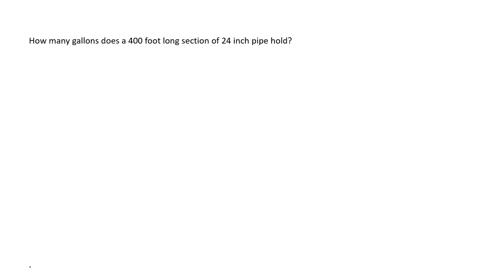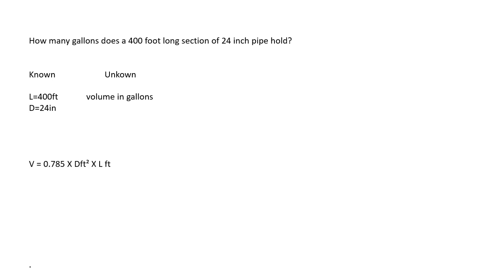How many gallons does a 400-foot long section of 24-inch pipe hold? With any word problems, I like to always pull out my knowns and unknowns to make it easier to keep track of when doing the math. What we know is that you have a 400-foot long section, the diameter is 24 inches, and what we're looking for is the volume in gallons. To find the volume of a pipe, we use 0.785 times the diameter in feet squared times the length in feet. So we're going to have to do some converting since the diameter is in inches.